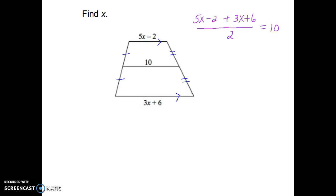A median is the average of the two bases. So if I was finding the average in this example, I'd be adding the 5x minus 2 and the 3x plus 6. Because I'm adding two numbers, I need to divide by the number 2 to find the average, and that should equal the length of my median.